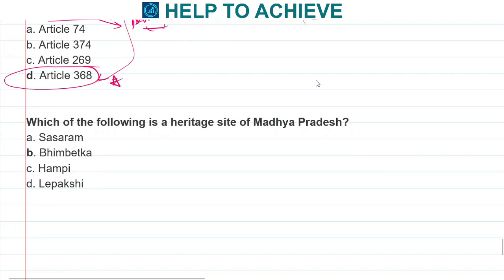One of the famous heritage sites which is in Madhya Pradesh is Bhimbetka. These you have to remember.